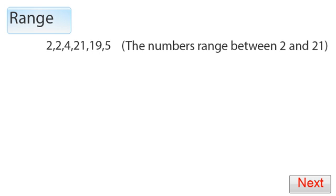Range is something we use to describe the range of numbers we have. For instance, if we had the numbers 2, 2, 4, 21, 19, and 5, we take our biggest number 21 and our smallest number 2, and we would say these numbers range from 2 to 21, meaning they're no smaller than 2 and no bigger than 21.